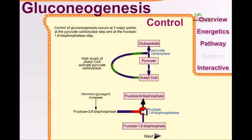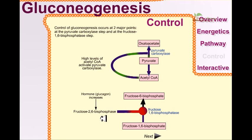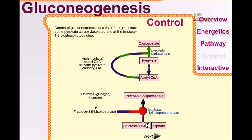The pyruvate carboxylase step is tightly regulated by fructose 2,6-bisphosphate. This fructose 2,6-bisphosphate can be produced inside the cell when there is a high ratio of the glucagon hormone signal. When glucagon signals the cell, the cell produces fructose 2,6-bisphosphate, which blocks the production of fructose 6-phosphate from fructose 1,6-bisphosphate.